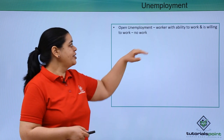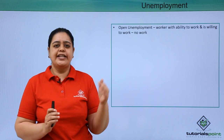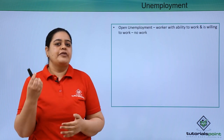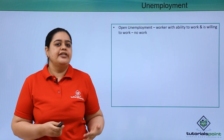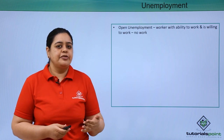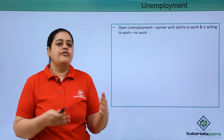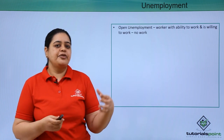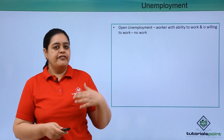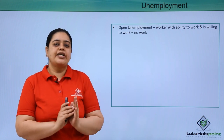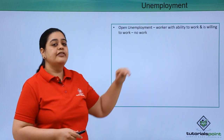Now there are types of unemployment, the first being open unemployment. This is when you would have seen your friends, cousins, or many other people searching for a job — reading a newspaper where job vacancies appear, or approaching someone to submit their resume or CV. These are people who are willing to work and want to work, but they do not have a job. There is no one giving them employment. This is open unemployment.